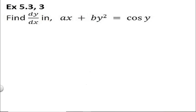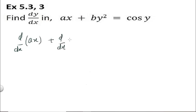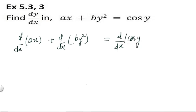Let us start with Question 3. In Question 3, as you can see, what is given is ax + by² = cos(y). In this question we will find dy/dx. We will write d/dx of ax + d/dx of by², differentiating both sides with respect to x.